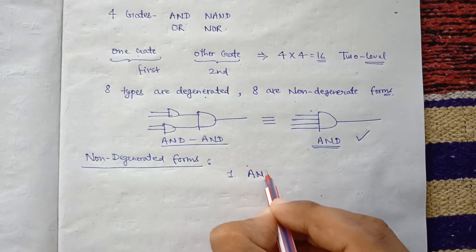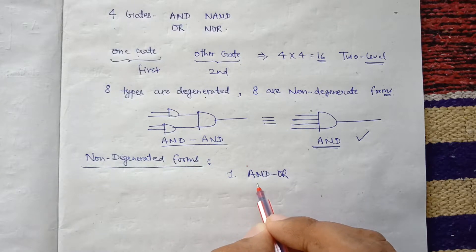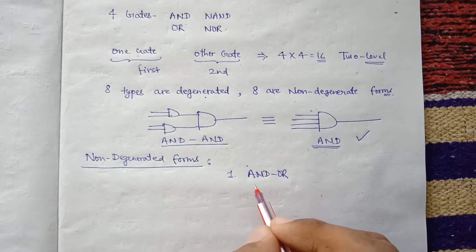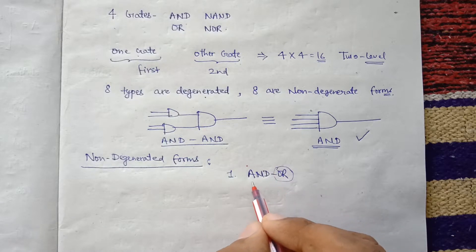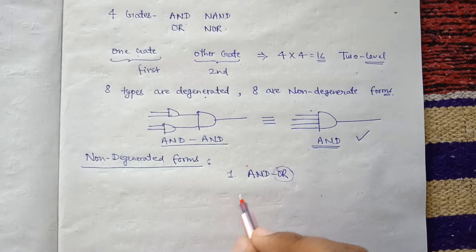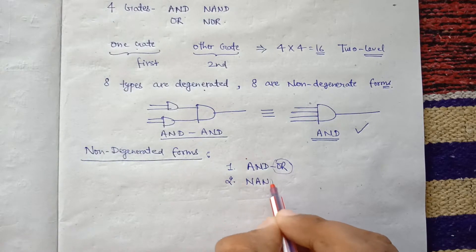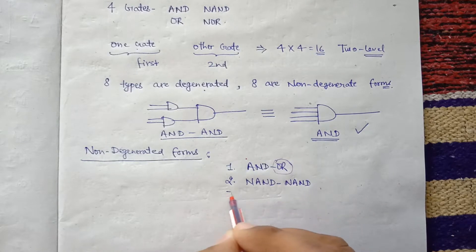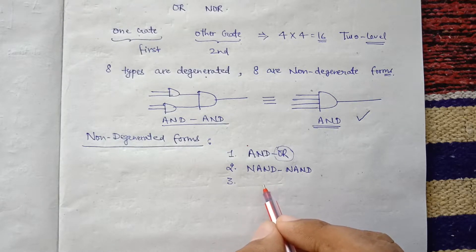The non-degenerated forms are: first, AND-OR — the first level consists of AND gates and the second level consists of a single OR gate, where the second level always has a single gate and the first level can have any number of AND gates depending on the number of terms. Second is NAND-NAND, which we have seen is used to implement Boolean expressions using only NAND gates.